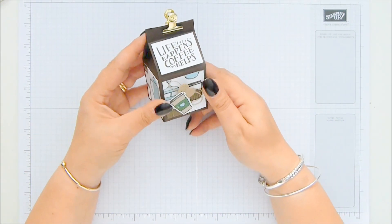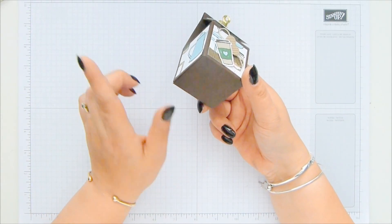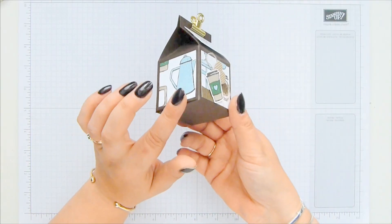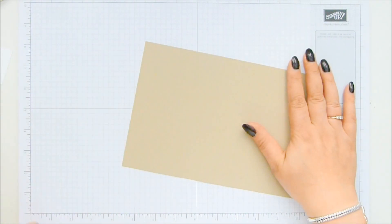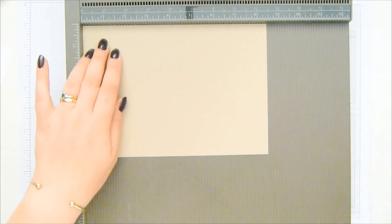So let's make this box. This one's done in early espresso, which is one of the colors in the pack. Soft suede is another, and so is crumb cake. Dark is very difficult to show you guys on camera. So I'm coming in with crumb cake this time. This piece measures eight and a half by six inches, which is 22 by 15 centimeters.